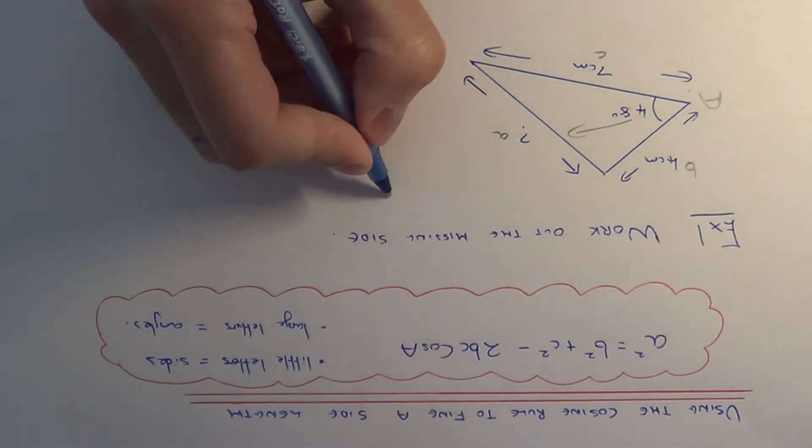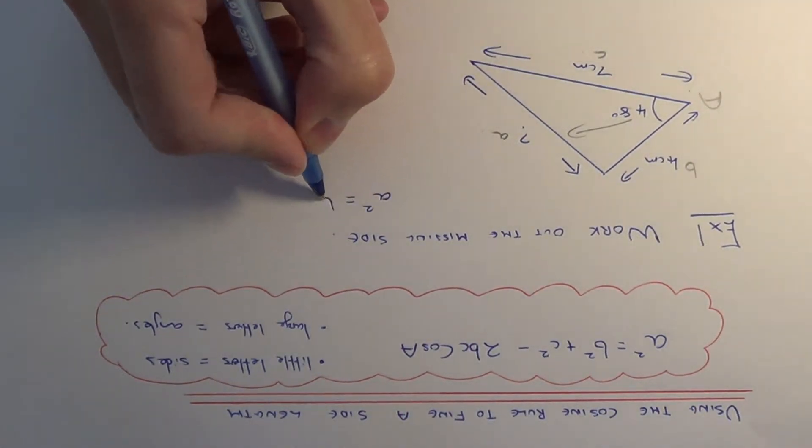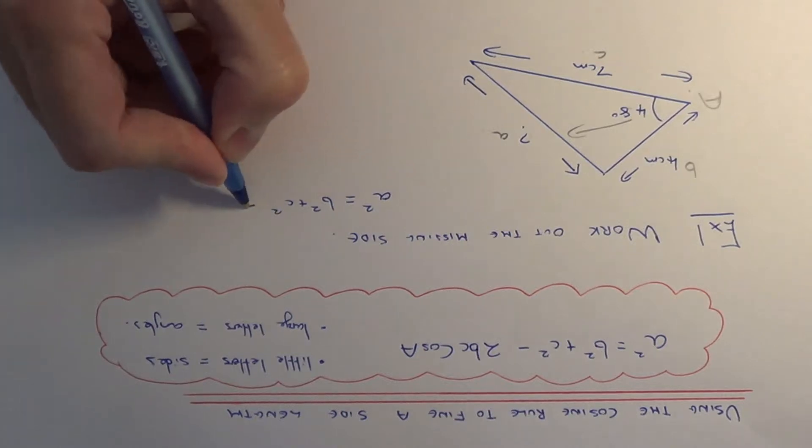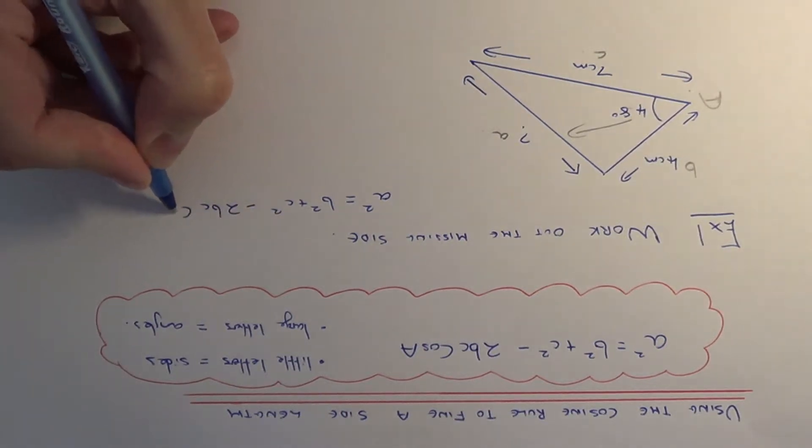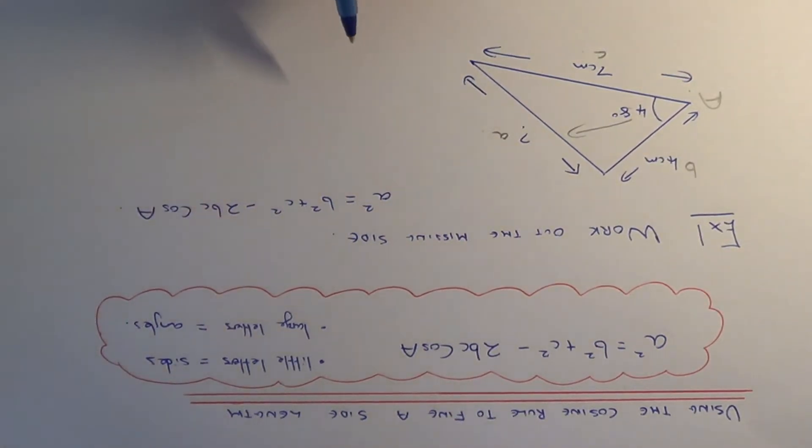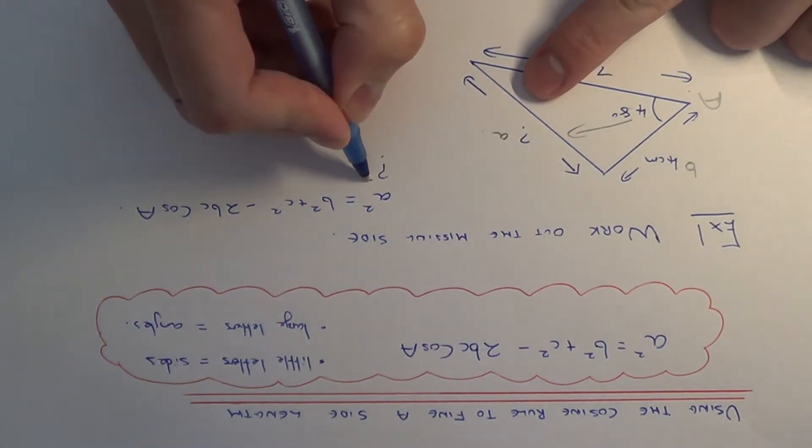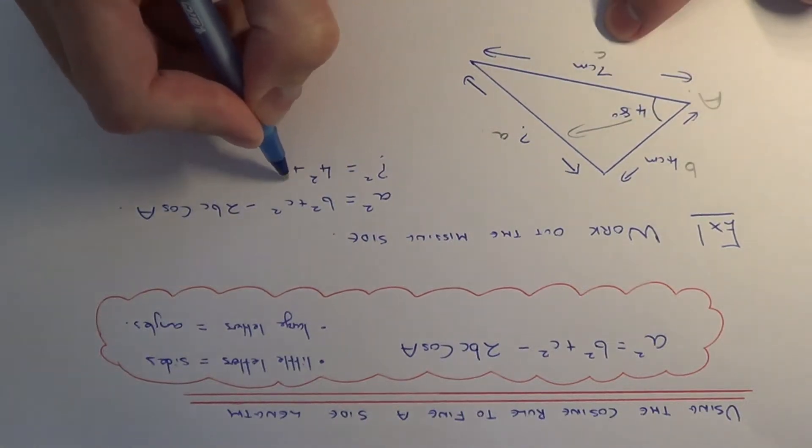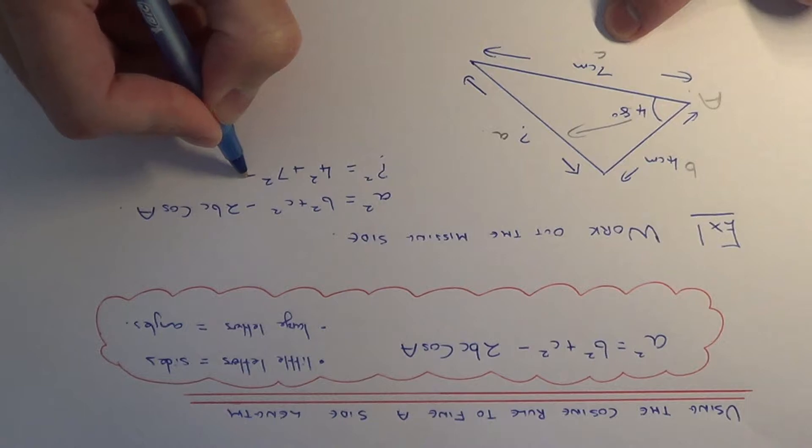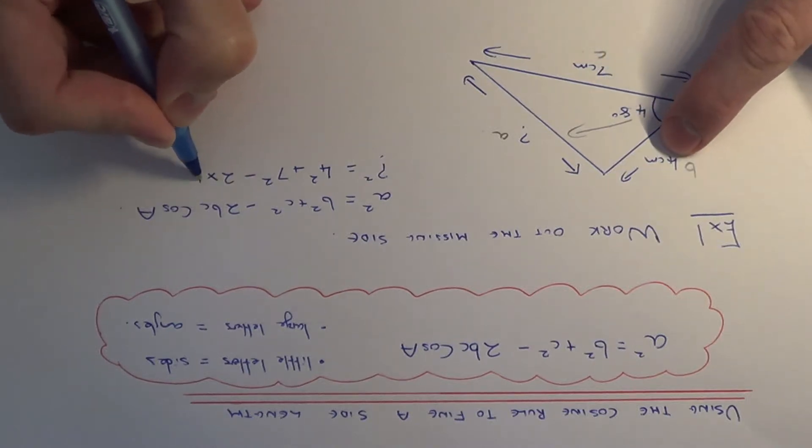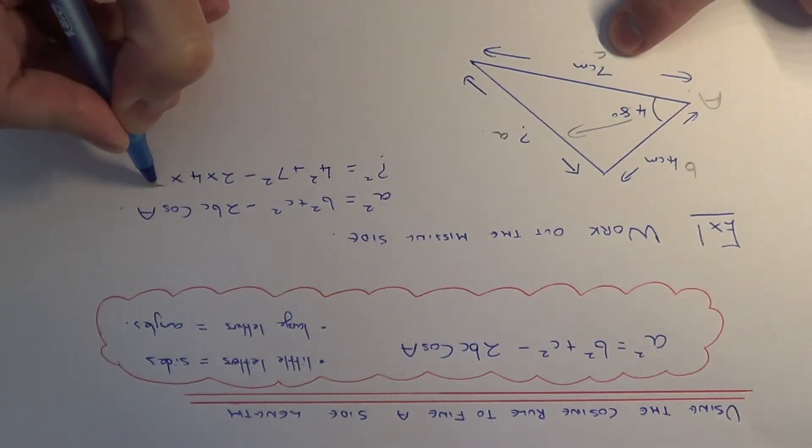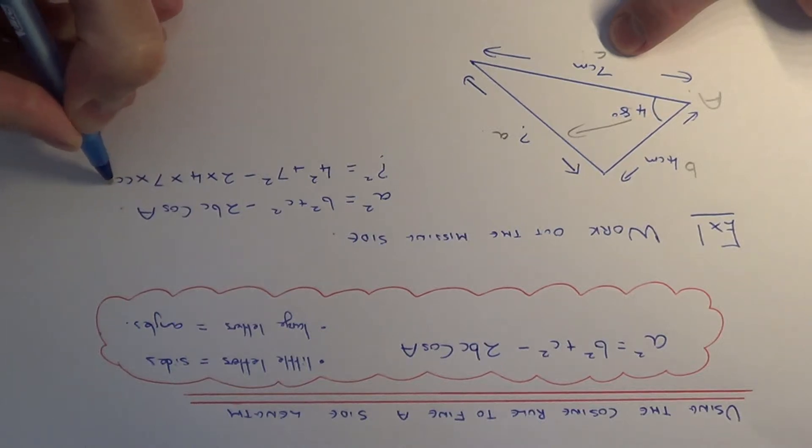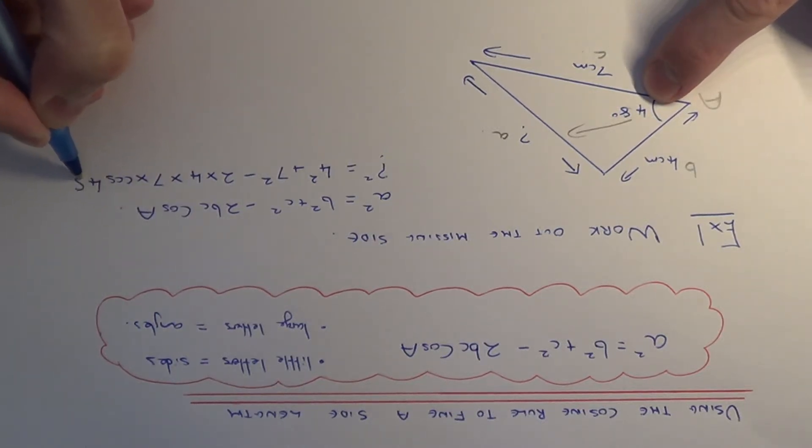Let's use our cosine rule then. We just need to substitute the numbers into our formula. So it would be question mark squared equals 4² + 7² - 2 × 4 × 7 × cos 48°.